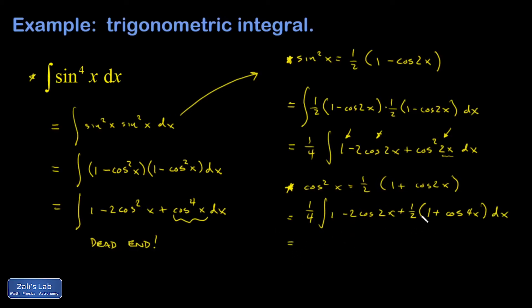Let's clean things up just a tiny bit more. I get a 1 half on this. And if I add it to 1, I get 3 halves. So I have 1 fourth integral. 3 halves. And then I have my cosine 2x term. And then I have plus 1 half cosine 4x dx.